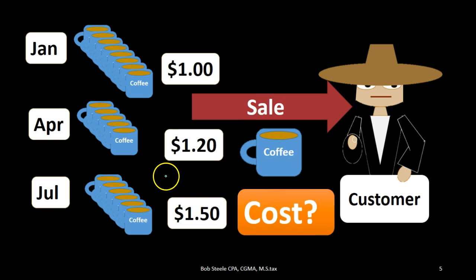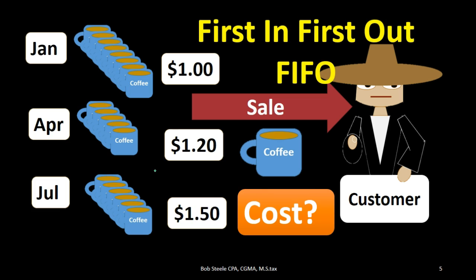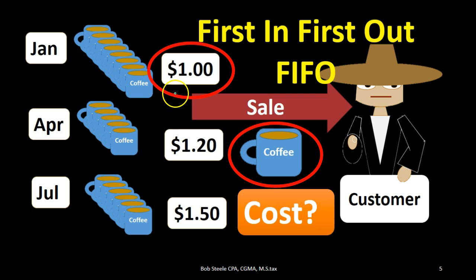We're not going to use specific identification. Using first in first out as our first example, we assume that the coffee mug was taken from the first batch — at $1 cost — rather than $1.20 or $1.50. This is the most intuitive method for most people because it usually follows what we think of as a normal flow of inventory: we'd try to sell the oldest inventory first. It's important to note, though, that this is just an assumption — not necessarily the actual physical flow of the mugs.